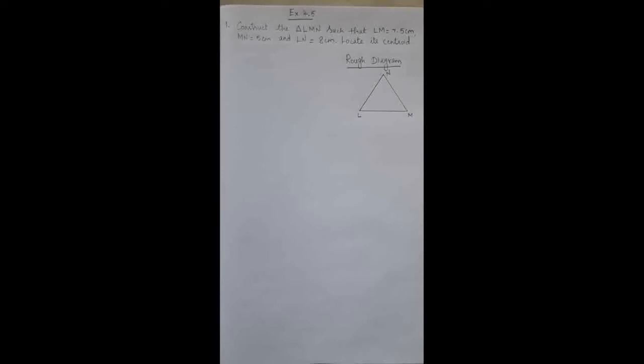Dear students, I am going to explain how to construct a centroid for given measurements of a triangle. Exercise 4.5, question number one: construct triangle LMN such that LM is equal to 7.5 cm, MN is equal to 5 cm, and LN is equal to 8 cm, then locate its centroid.